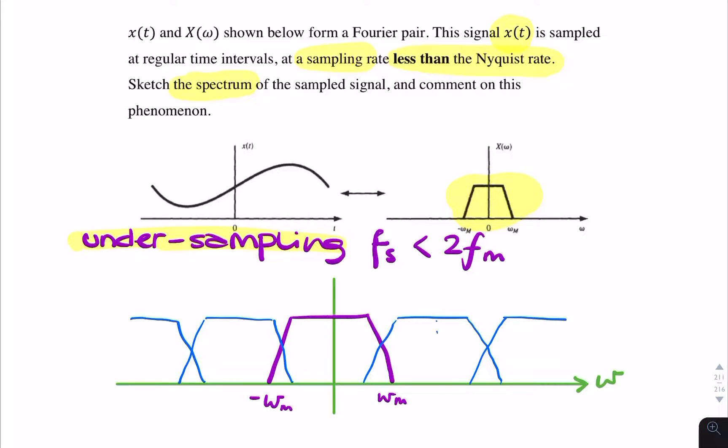So this frequency here, that's your sampling frequency, omega s. And here you've got twice omega s. Here you've got minus omega s. And this point here, that's omega s plus omega m. And that there, that's the spectral overlap. That's the bit that's causing our aliasing.